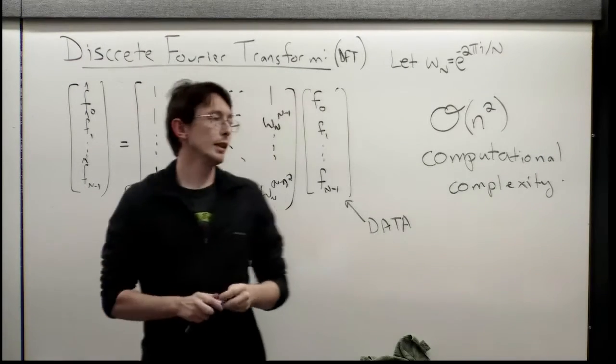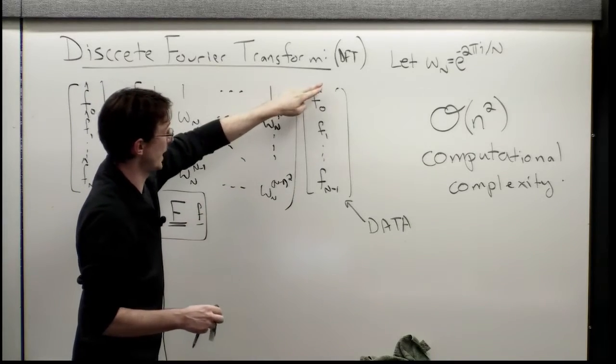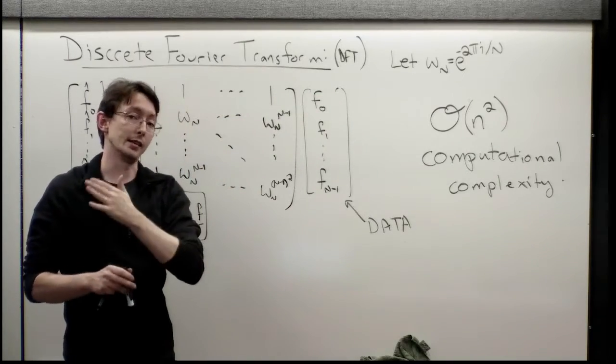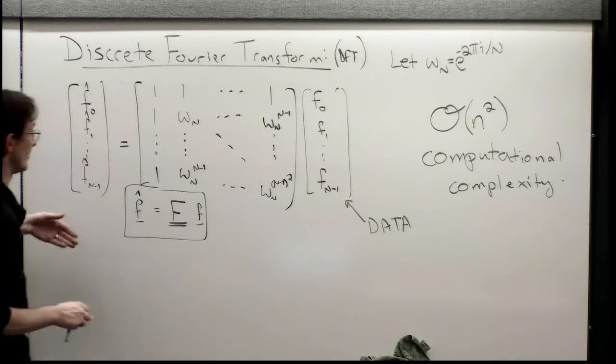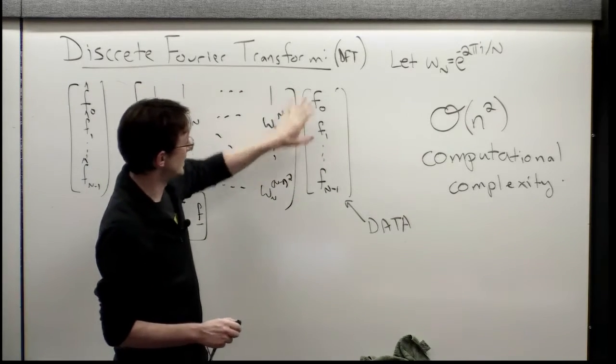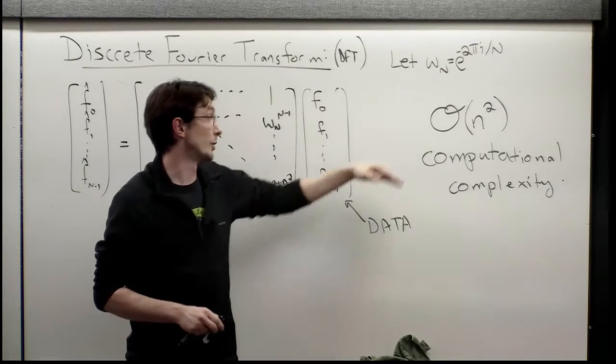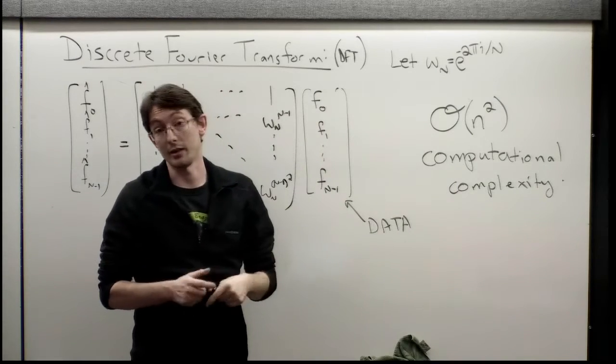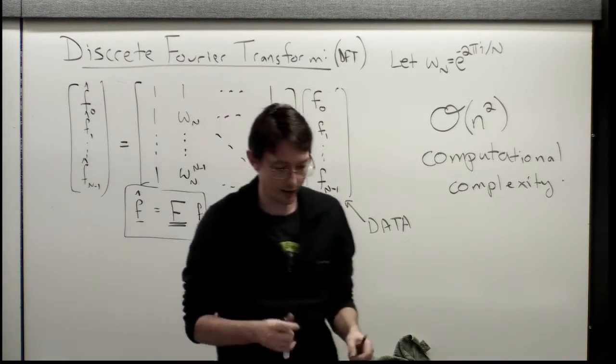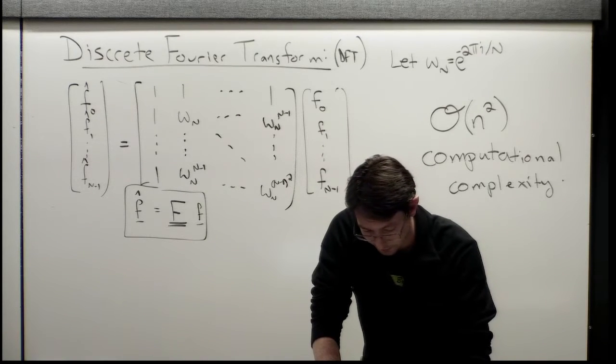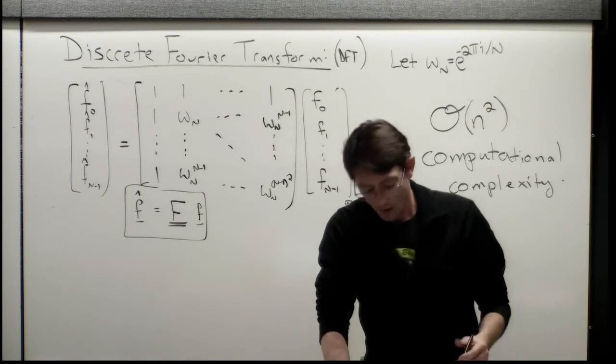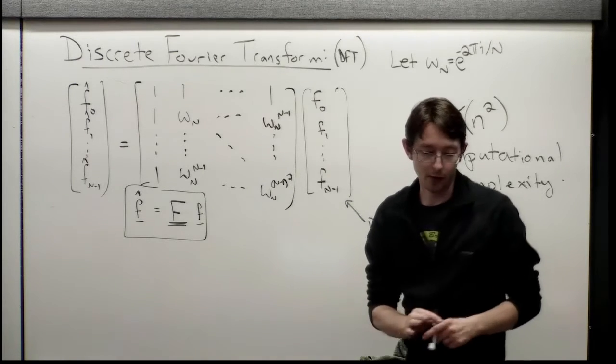Last time, we found that this method scales like order n squared computational complexity. What that means is that if this is a vector of length n, I have n samples, then it's going to take n squared calculations to get my frequency components. If I double the length of my data, I quadruple my computational cost. So it's not great, but it's not terrible in general.